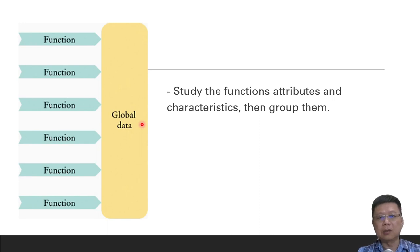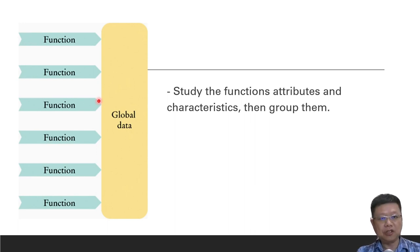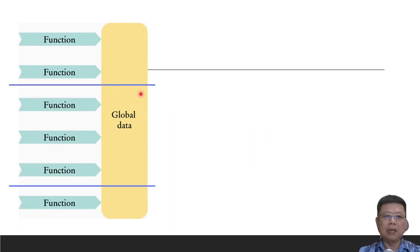In order to solve this, we can change the way we program, especially the functions. We should know each of them clearly — whether they have the same attributes or characteristics, and whether they share the same variables. If yes, then we can group them.